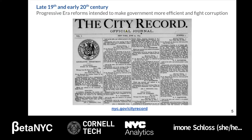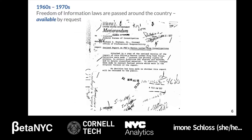In New York City, these progressive reforms led to the creation in 1873 of the City Record — an official public journal to share city notices and updates. You're looking at an image of the very first issue, volume one, number one.